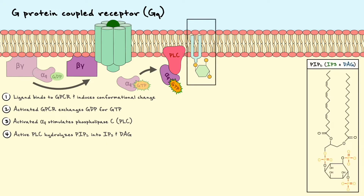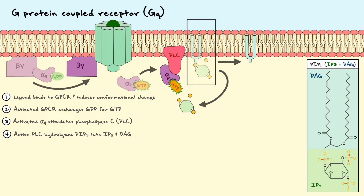When we take a look at the molecular structure of PIP2, there are two main components. First, there is a ring with three phosphate groups called inositol-1,4,5-trisphosphate or IP3, and secondly there are two fatty acid chains that form diacylglycerol or DAG. The hydrolysis of PIP2 leads to the production of two second messengers: DAG and IP3.